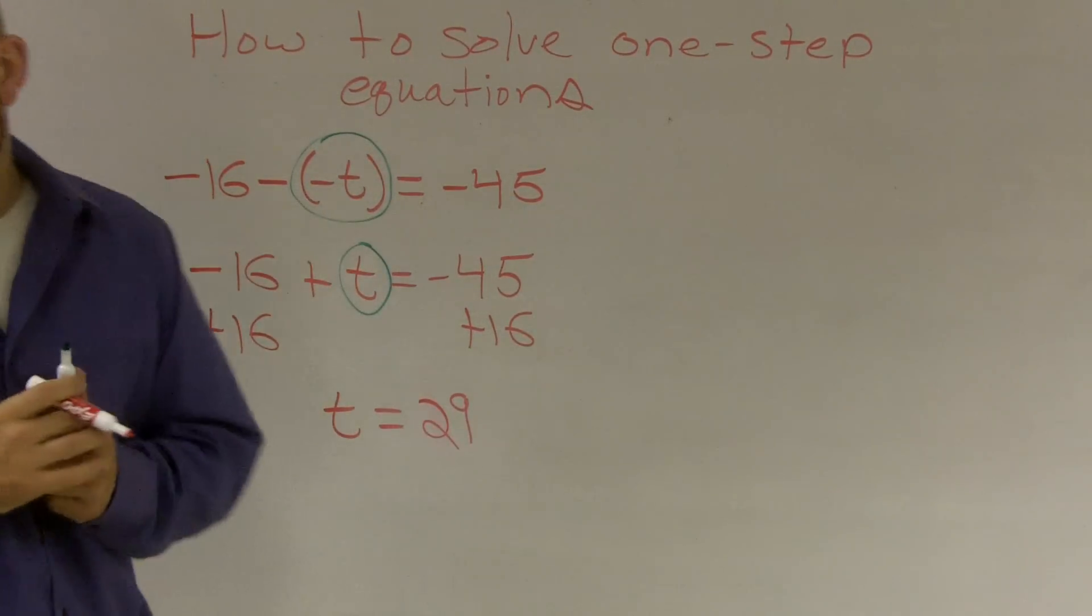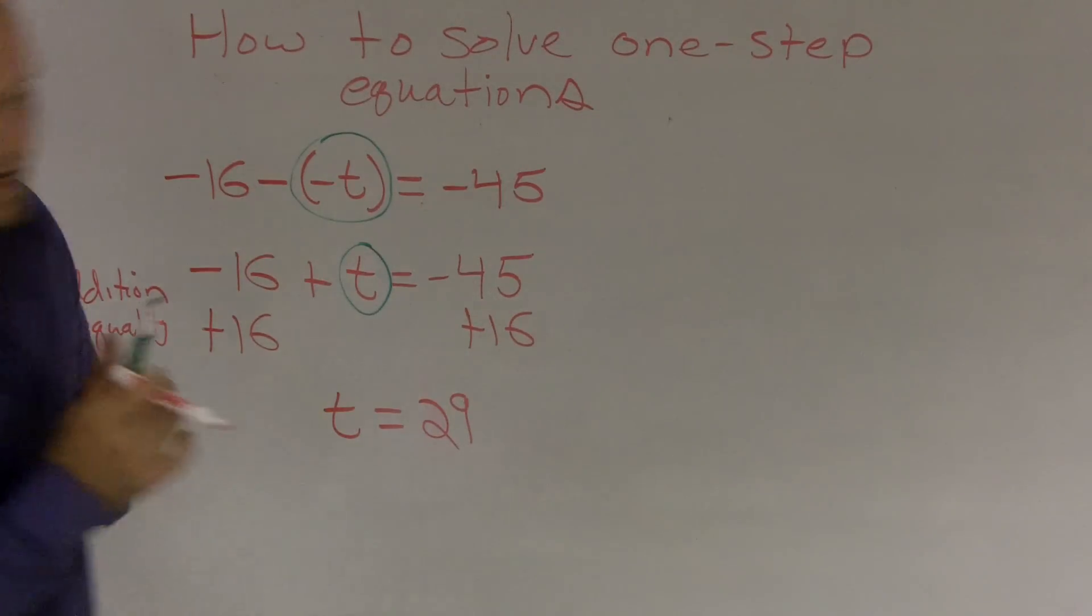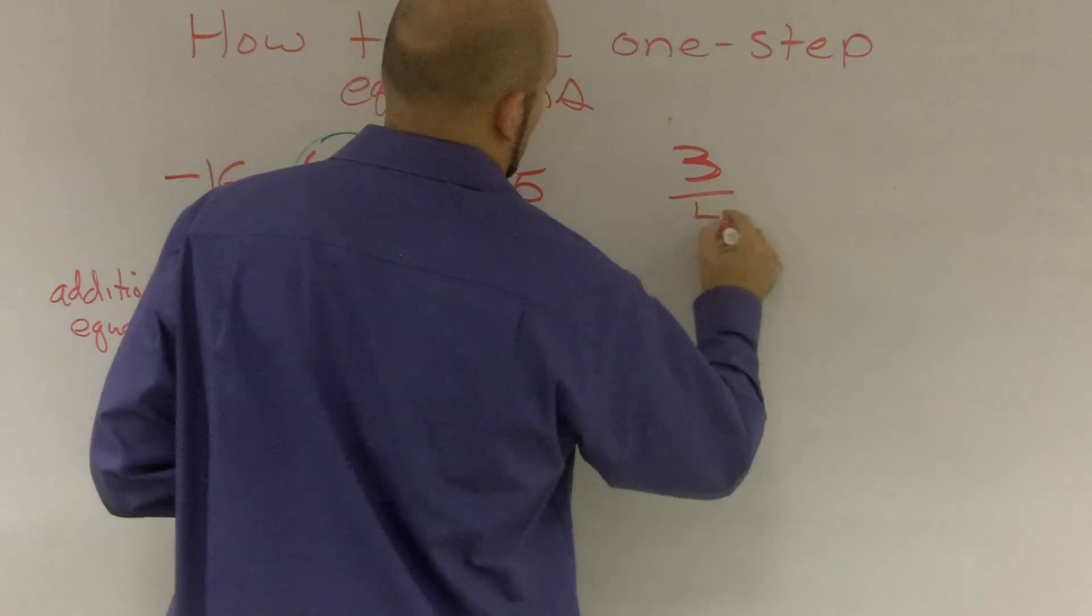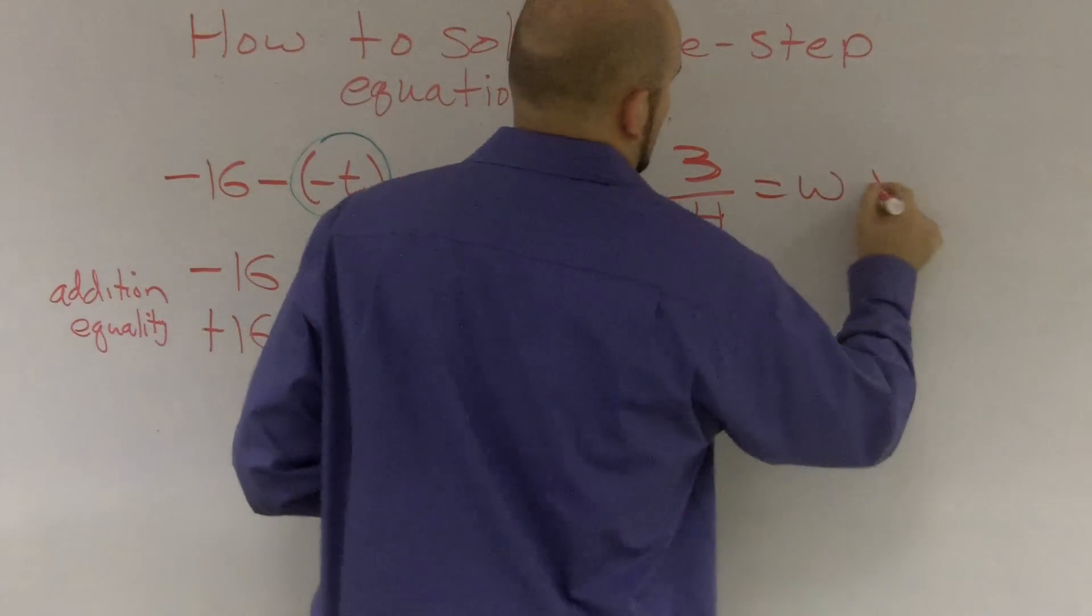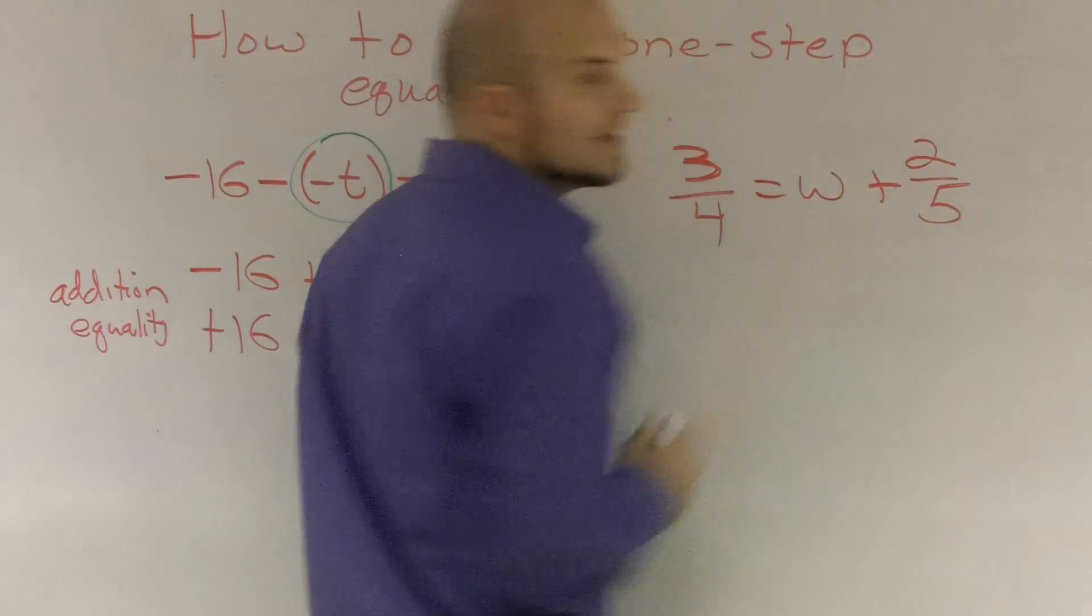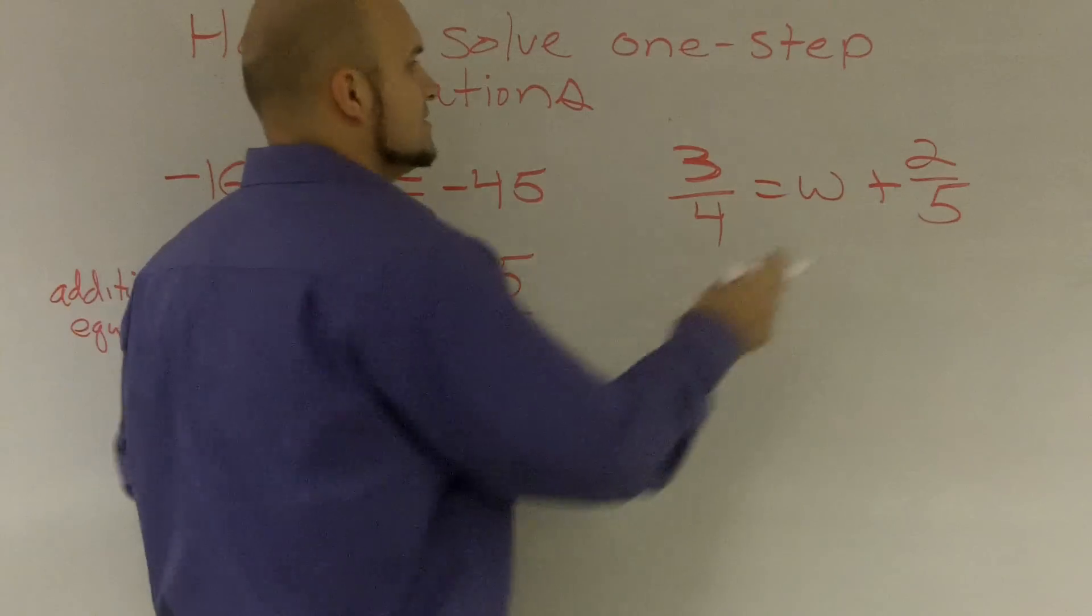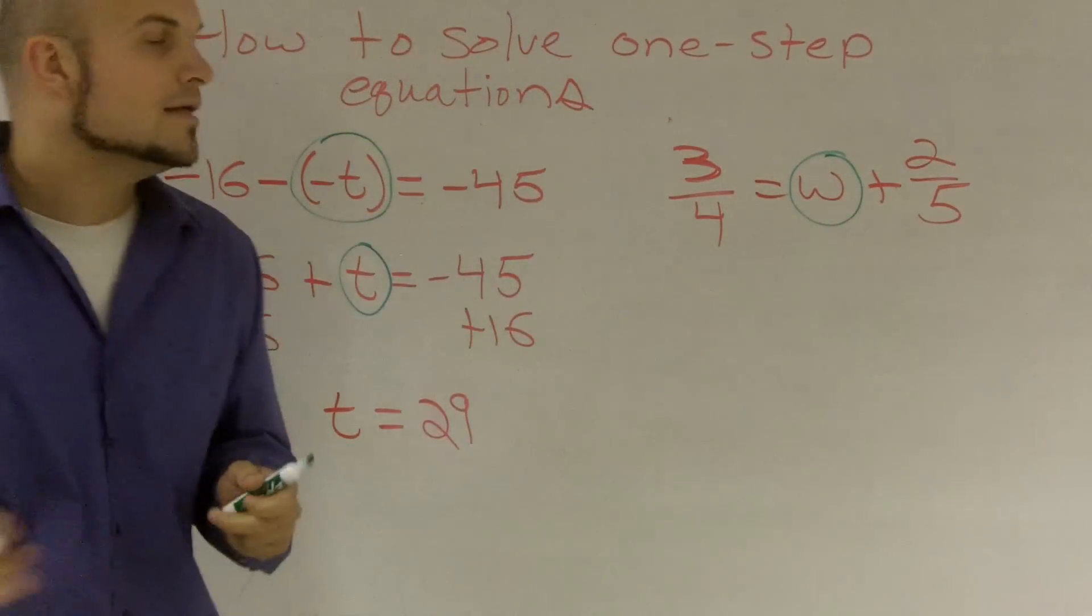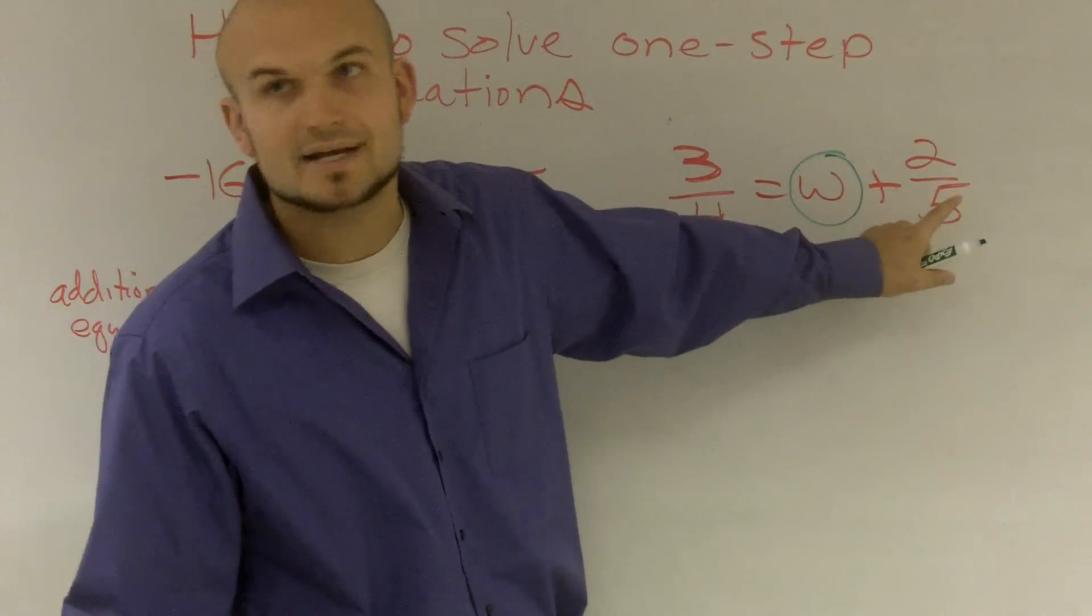Then, when I'm going to solve my second equation, which is number 30, I have 3/4 equals w plus 2/5. Again, on this problem, what I'm going to do is circle my variable. Then, the next thing I need to look at is what is happening to my variable? And I see my variable is being added by 2/5.